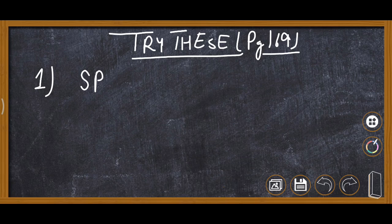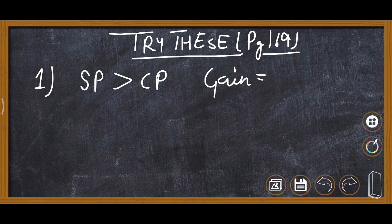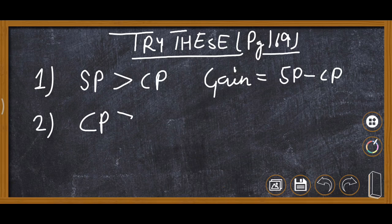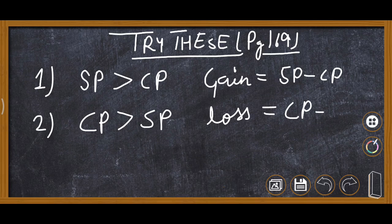When selling price is more than cost price, there will be gain — gain means profit. The formula will be: Gain = SP minus CP. When CP is more than SP, there will be loss, and the formula of loss will be: Loss = CP minus SP.